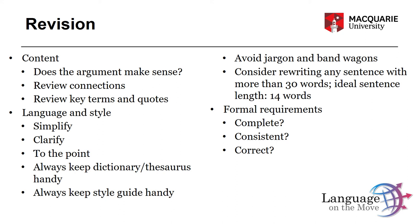Another round of revision: revise for language and style. As much as possible, simplify, clarify, and make sure to be to the point. Always keep a dictionary and a thesaurus handy — it's always a good idea to figure out if there's a better way of saying something or how not to repeat the same word over and over again. Having an online dictionary or thesaurus open while you write is a great way to improve language and style. Have your APA style guide as well as more general style guides handy and use them regularly.